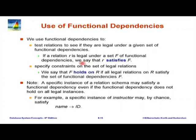What is the use of functional dependencies? We can test relations to see if they are legal. We say that a relation r satisfies a set of functional dependencies F if r is legal under F. The part we are really going to use is that F holds on R if all legal relations on the schema satisfy this set of functional dependencies. Sometimes we are loose with terminology—we may say 'satisfies' or 'holds,' but we mean that it holds on all legal relations, not just a particular instance.